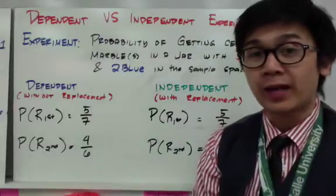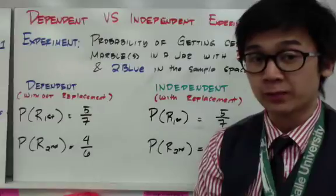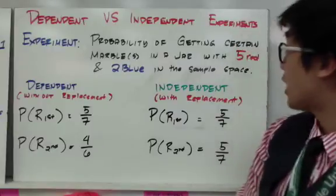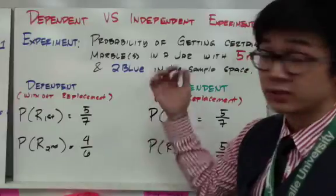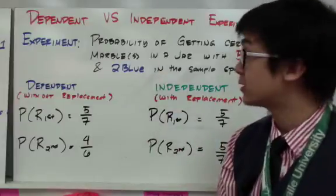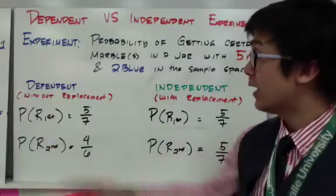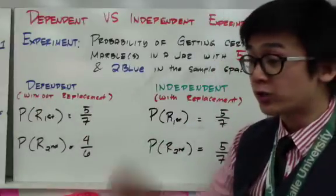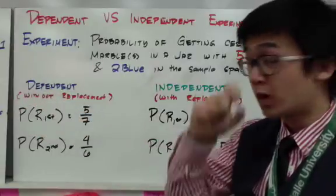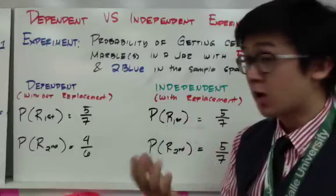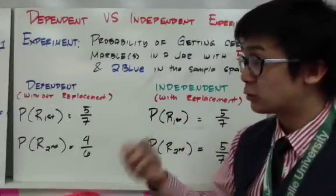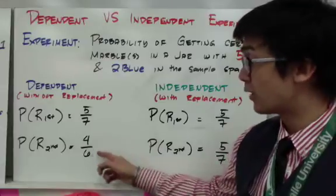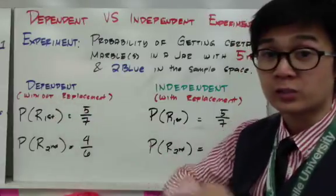Sometimes we can create an independent or dependent event within a single experiment. Using the same jar of five red and two blue marbles, the event becomes dependent if the problem states the rule is without replacement — you don't return the marble to the jar. For two picks seeking two red marbles, the first probability is five out of seven, and the second changes to four out of six.